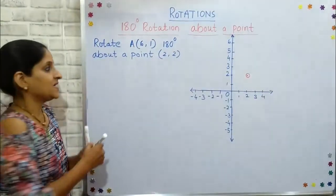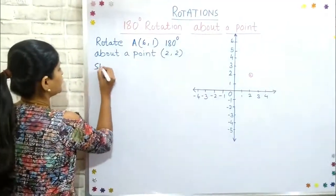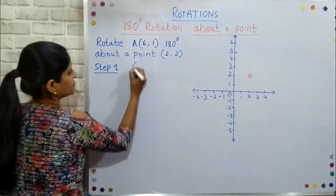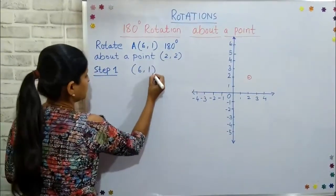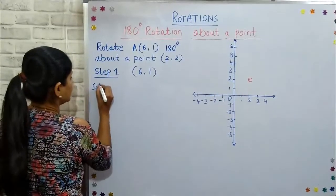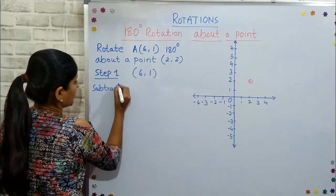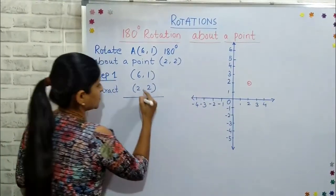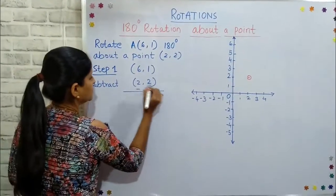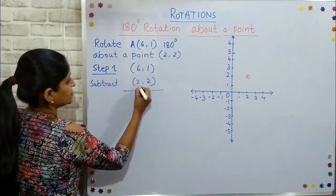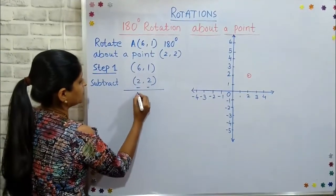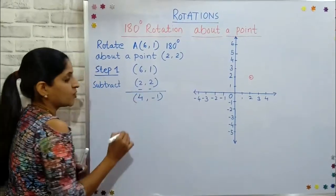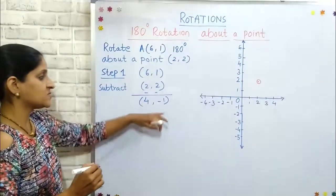We have three steps for 180 degree rotation. Step number one: we have to write down the coordinates of the given point and then subtract the point about which we have to do the rotation. So here we subtract point (2,2), and after subtraction I obtain (4, -1). This is my point obtained after subtraction.